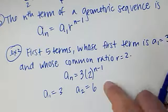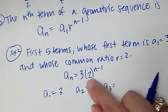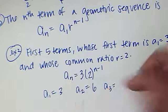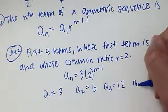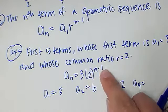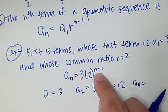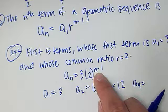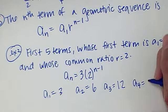A3. I'm going to plug in 3 minus 1 is 2, 2 squared or 2 times 2 is 4, times 3 is 12. A4. 4 minus 1 is 3, 2 to the third power is 2 times 2, which is 4, times 2, which is 8, times 3, 8 times 3 is 24.